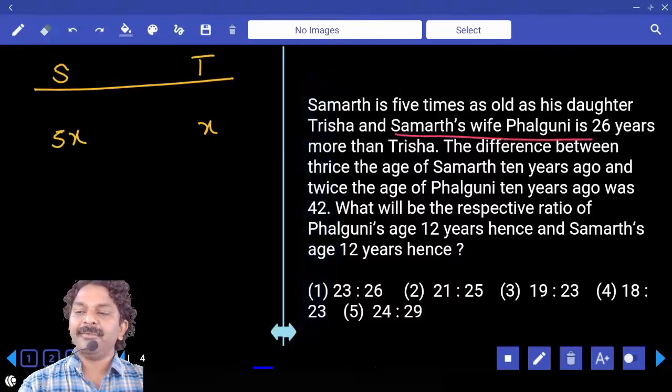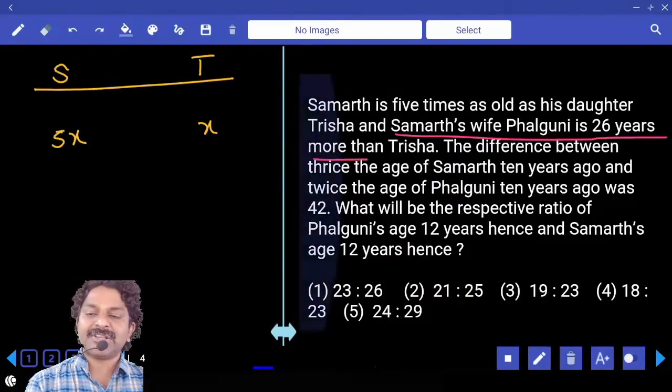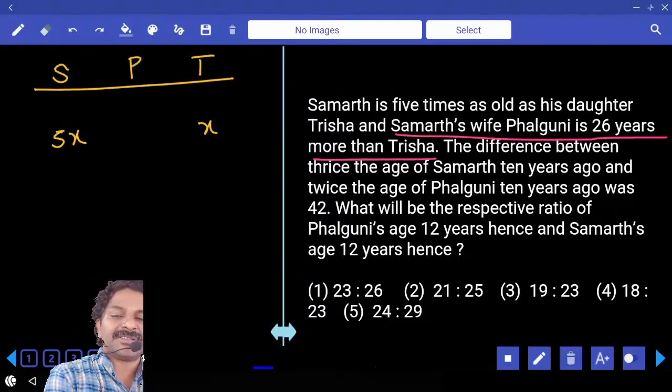And Samarth's wife Phalguni is 26 years more than Trisha. That means X plus 26.